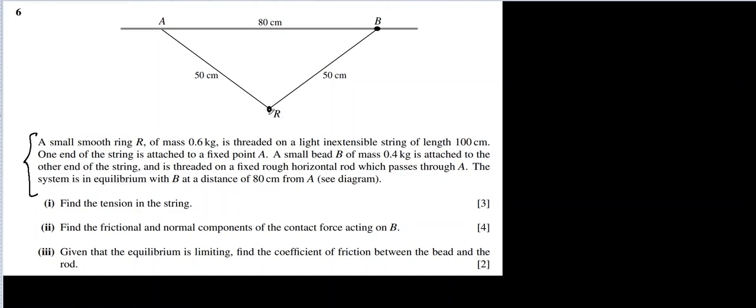Okay, so they are saying that this is a ring whose mass is 0.6 kg. That means the force downwards from it will be 6 Newton, which is the weight of the ring. Similarly, the bead's mass is 0.4 kg, so the weight of this one will be 4 Newton.